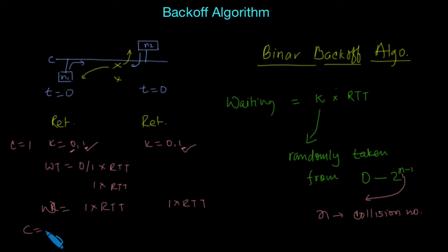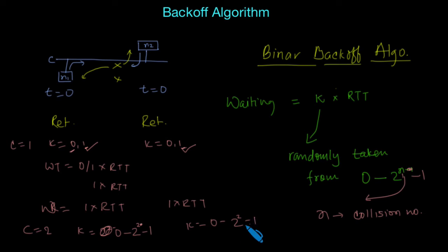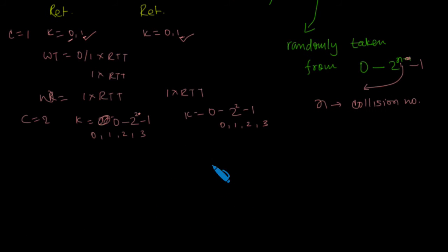Now c equals 2. The value of k is randomly chosen from 0 to 2 to the power 2 minus 1, which gives the range 0, 1, 2, and 3 for both stations. With the number of collisions increasing, the probability that they will attempt to transfer at the same time decreases. That is how we resolve the situation of collision.